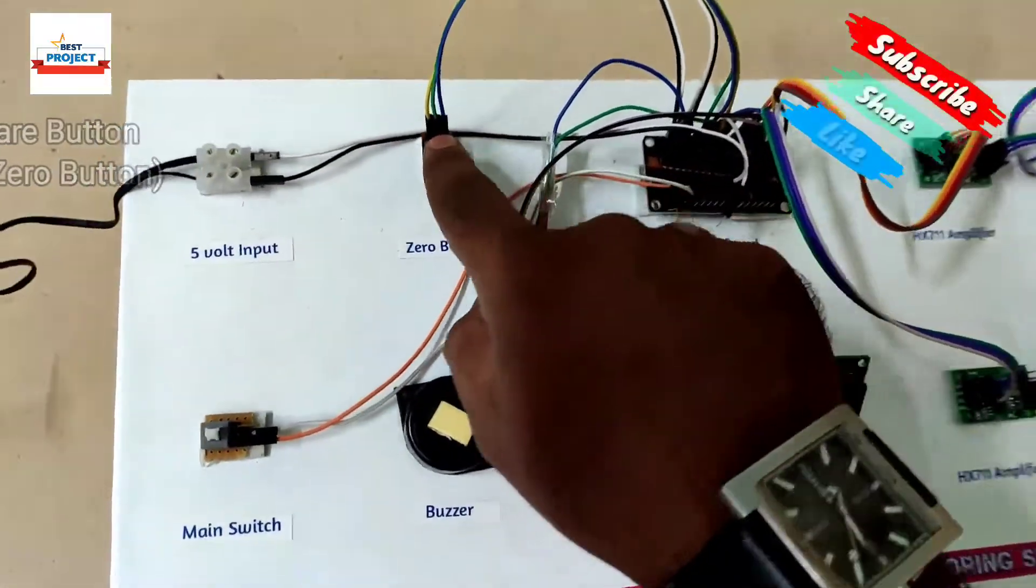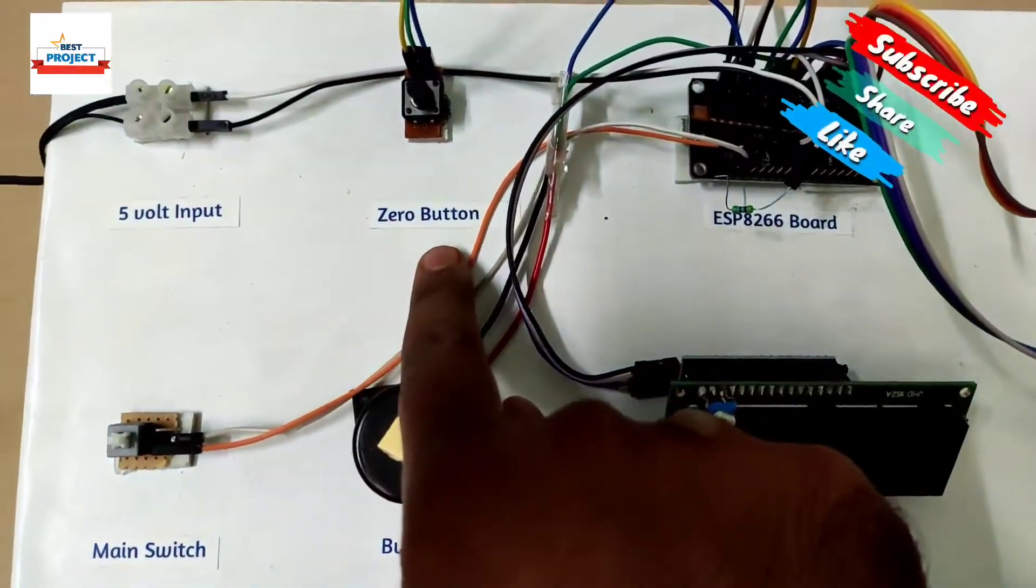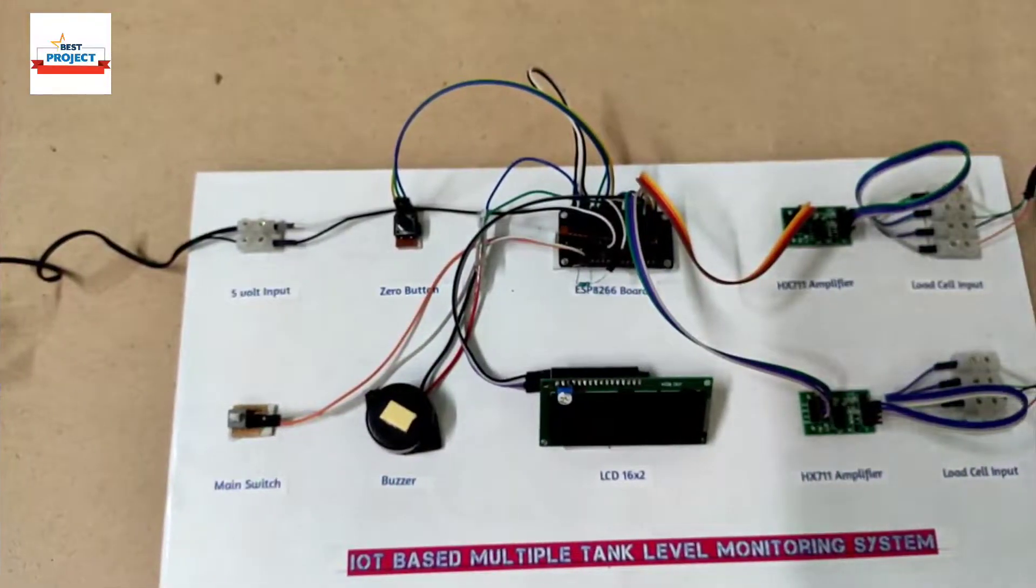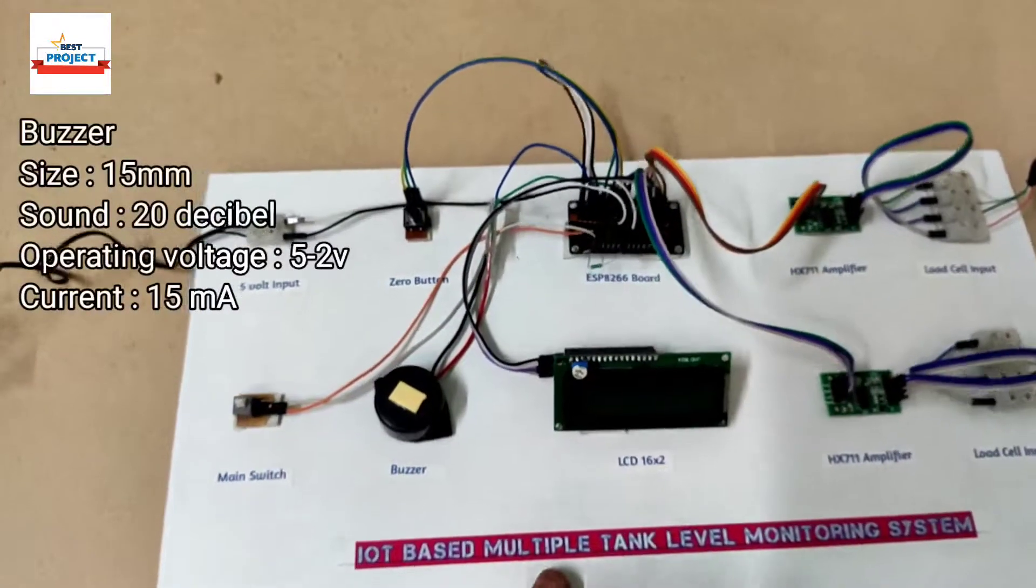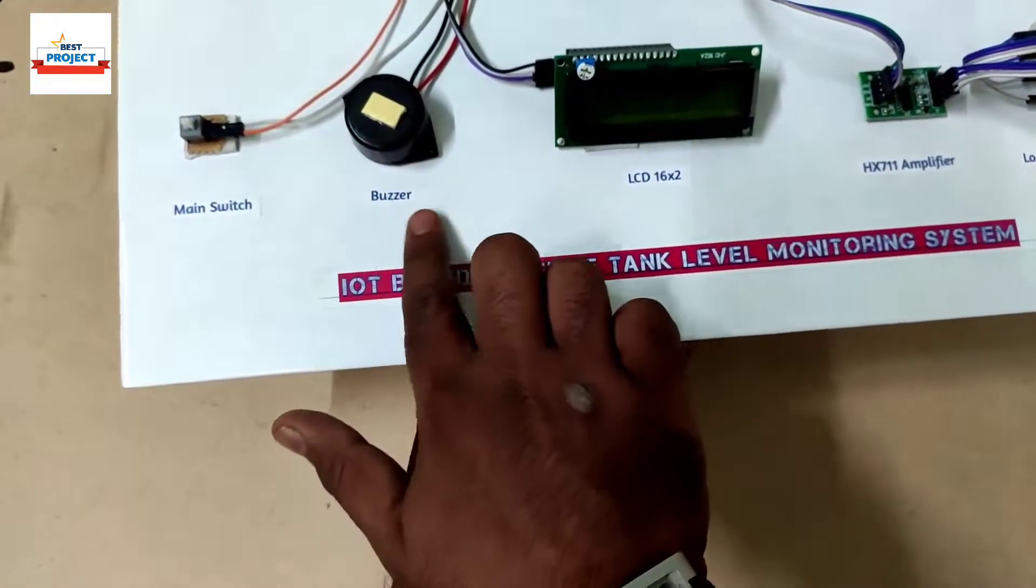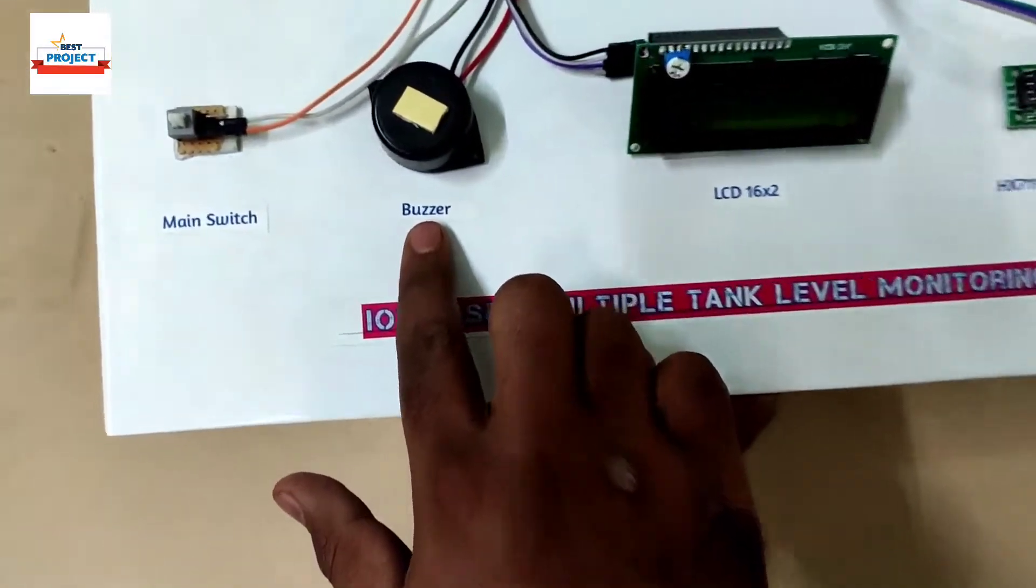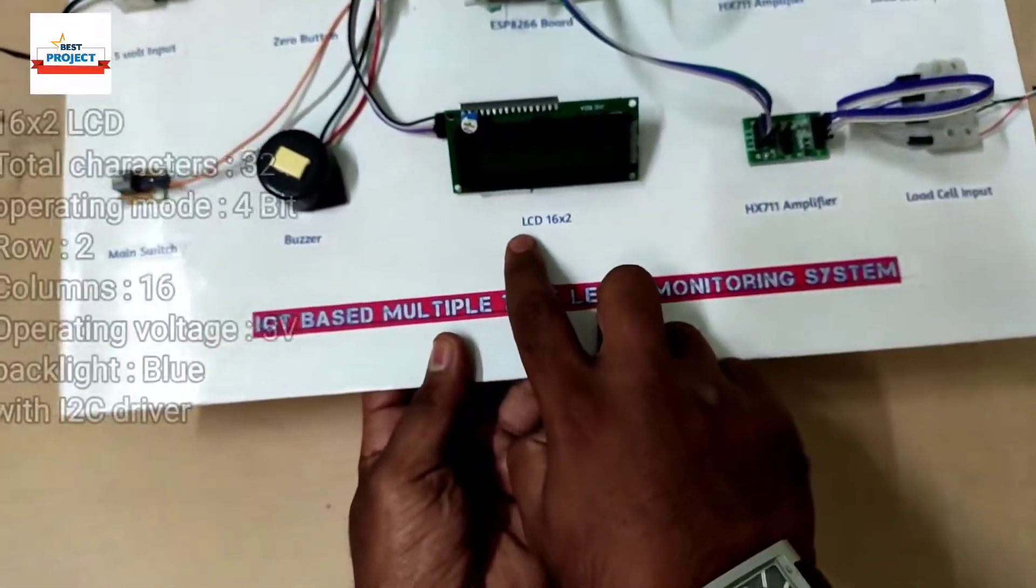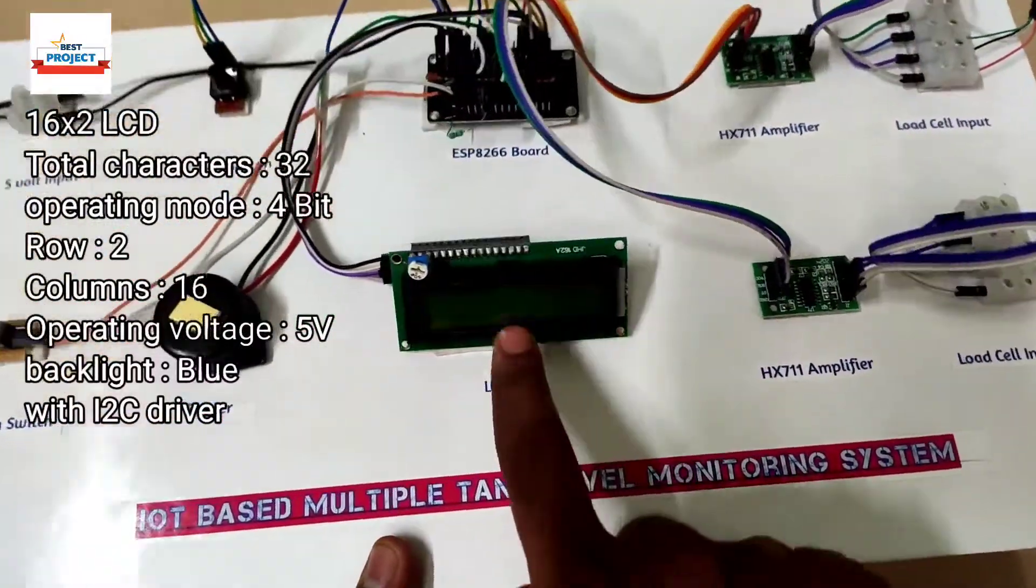The third component is a push button used to tare the load cells to zero. The next part is a black buzzer that will continuously beep when tank level is less than 10% to give an indication.